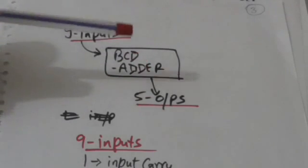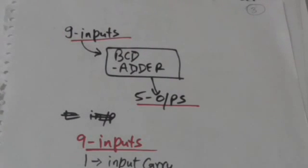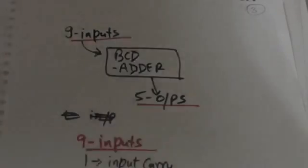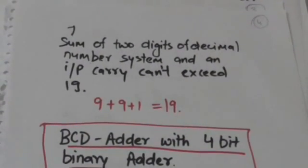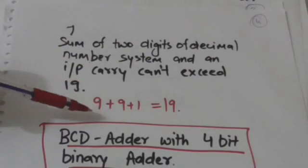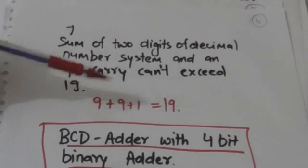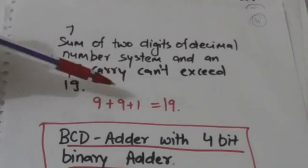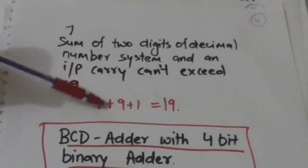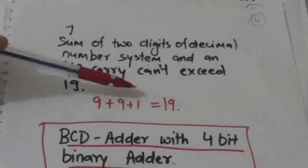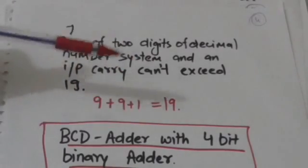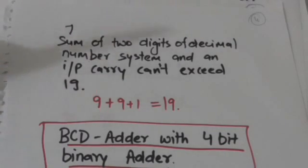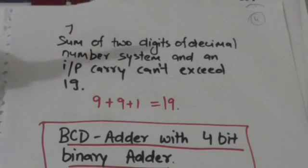The sum of two digits of the decimal number system and an input carry cannot exceed 19. This is because the maximum value of a digit in the decimal number system is 9. So if both digits are 9 and the input carry is 1, their sum would be 19. Therefore, the maximum sum of two decimal digits and an input carry is 19.